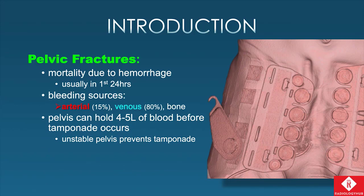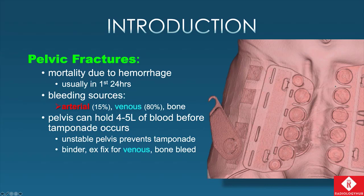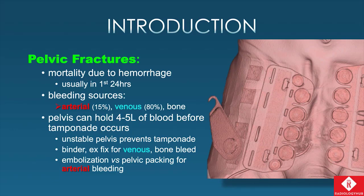Bleeding sources can be arterial, in about 15%, with the majority being venous and a small percent being osseous bleeding. The pelvis can hold four to five liters of blood before tamponade occurs spontaneously, and the unstable pelvis is unable to prevent tamponade because you can keep expanding the size of the pelvis. This is why we put patients in a pelvic binder. Those are helpful for venous and bone bleeds, but arterial bleeding requires embolization or pelvic packing.